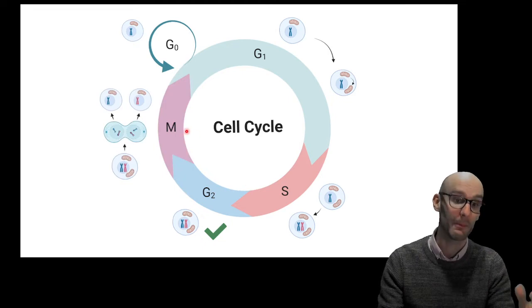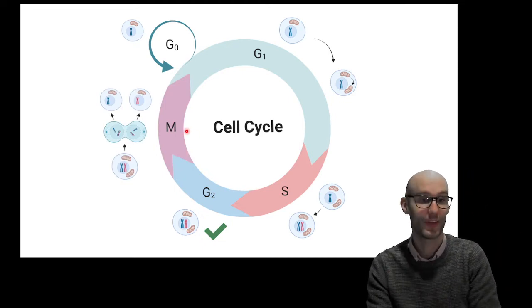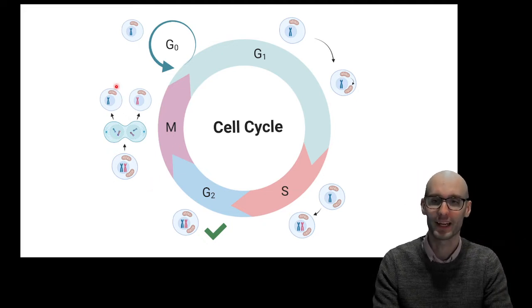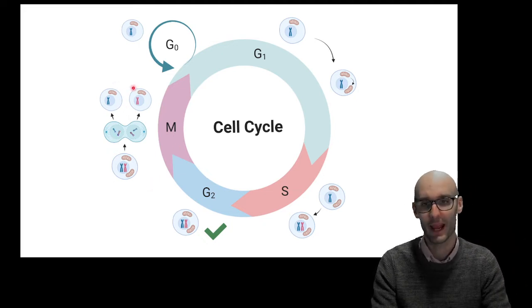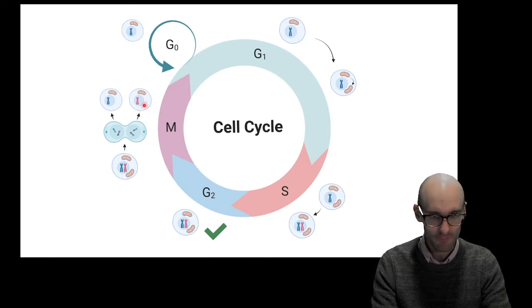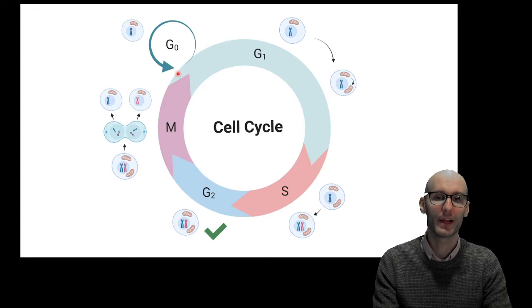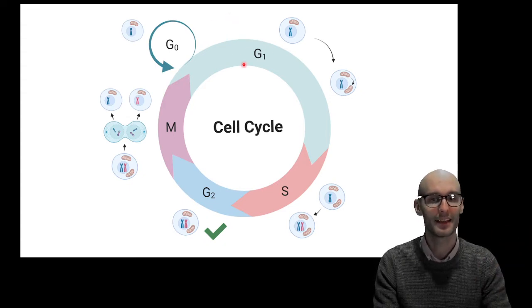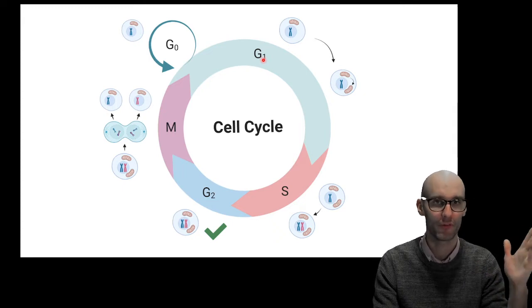Then we undergo the M phase, which stands for mitosis. So that's nice and easy, because we know mitosis is cell division. And we undergo the regular cell division. And then we end up back here with a diploid cell, just two sets of chromosomes in that cell. And now it can either go into the G0 phase and just sit and do its job, or it can go back into the G1 phase and go round and round again, duplicating over and over again.